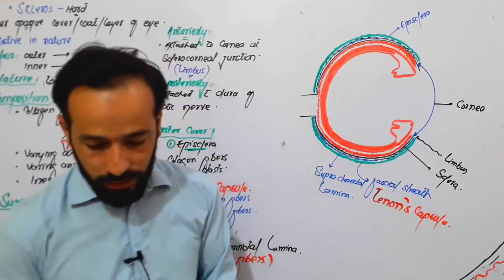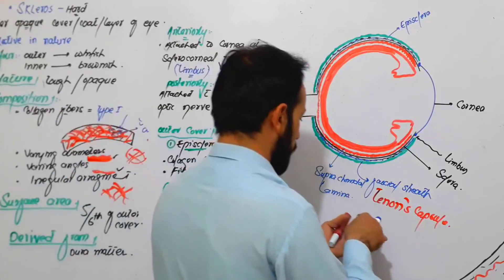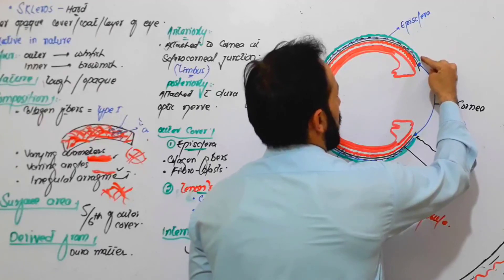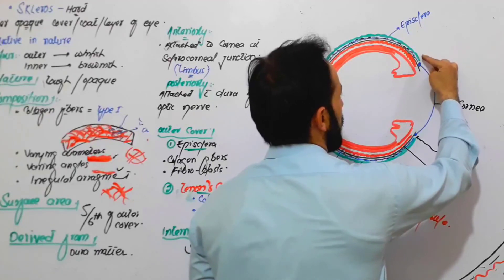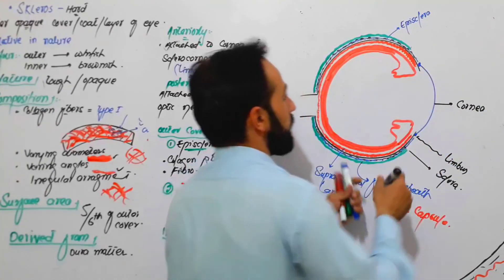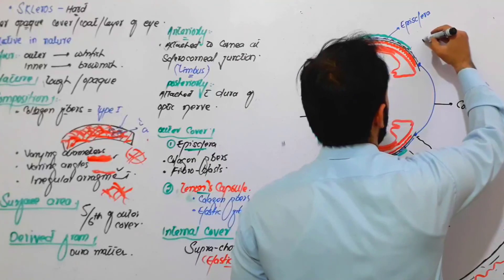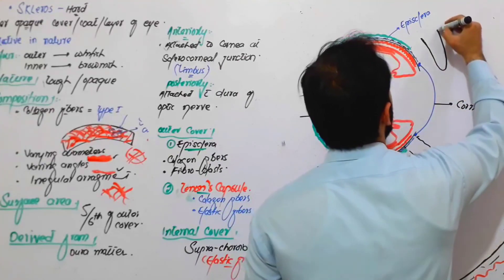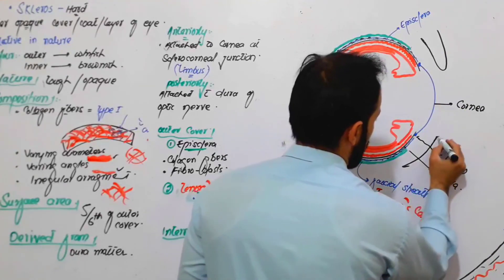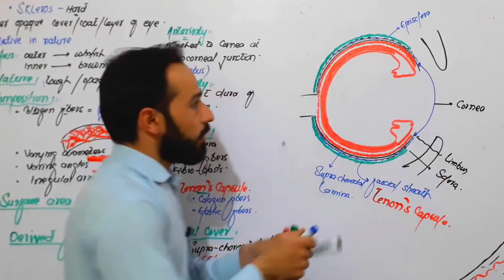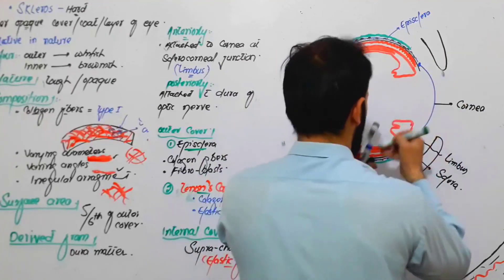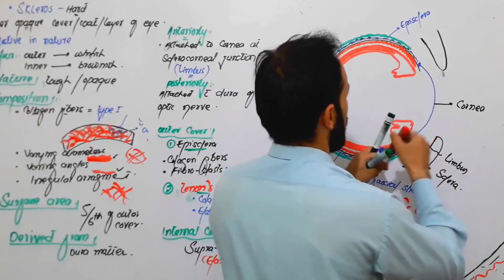Now let's move forward. Outer to this episclera there is an attachment. If you have your eyelids here, behind the eyelid there is a very special layer, and that special layer is called the...